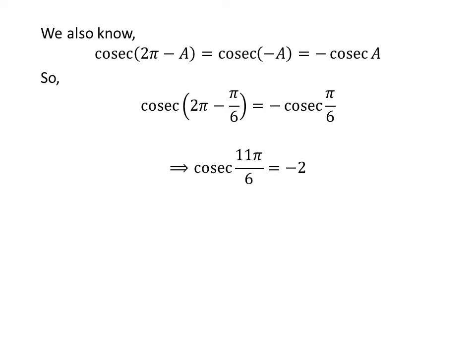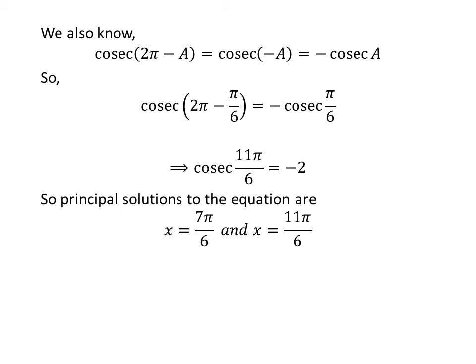Applying the identity as before, we get cosecant of 11 times pi upon 6 is equal to minus 2. So the principal solutions to the equation cosecant of x is equal to minus 2 are 7 times pi upon 6 and 11 times pi upon 6.